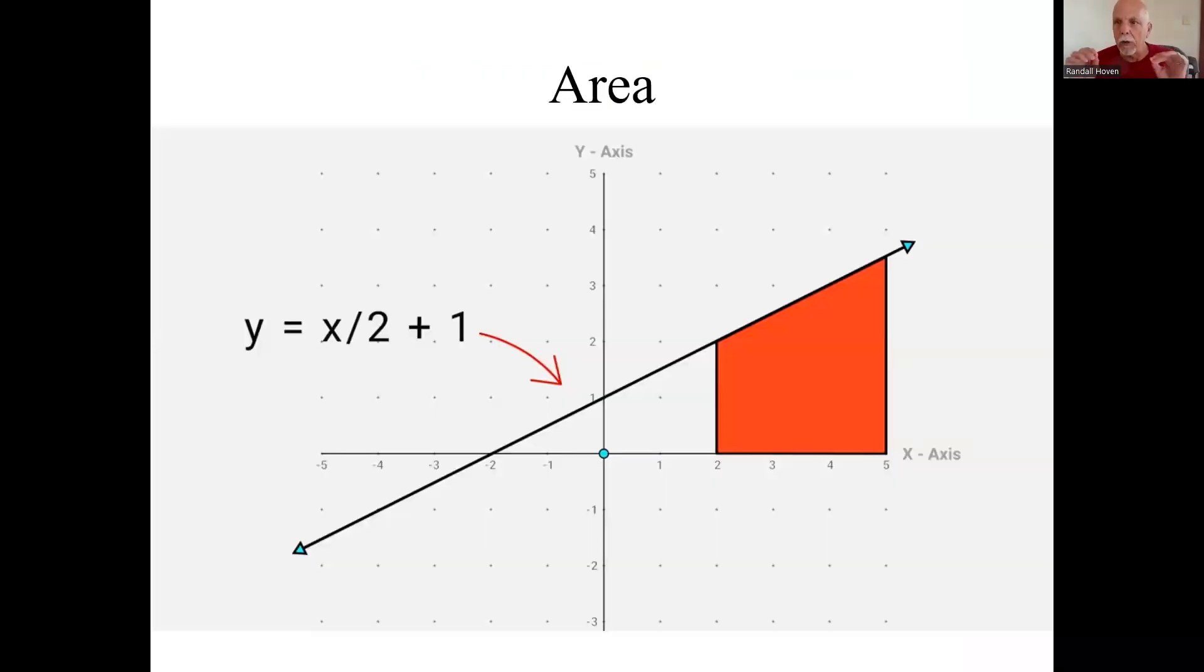Now let's talk area, area under a straight line again. So somebody gives you this straight line, and by the way, the straight line has an equation. This one happens to be y equals x divided by two plus one. Area between two x values, say between a and b, in this case it looks like two and five.